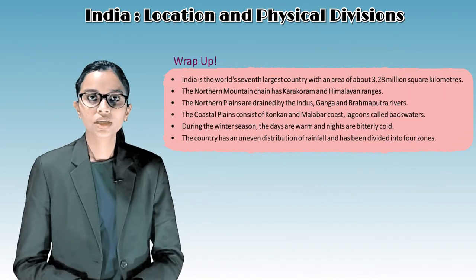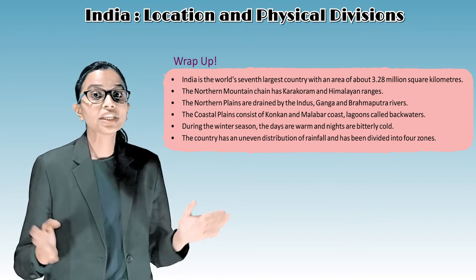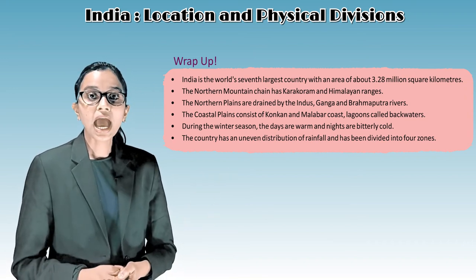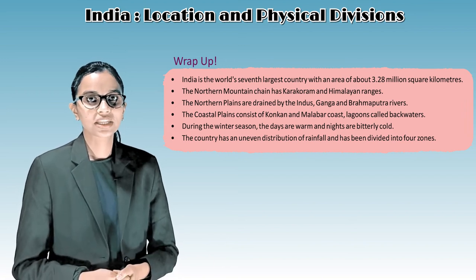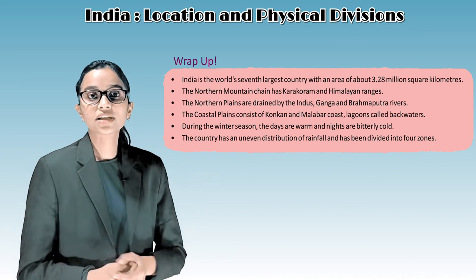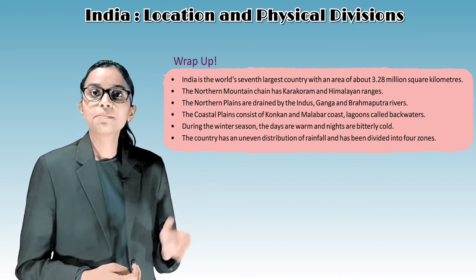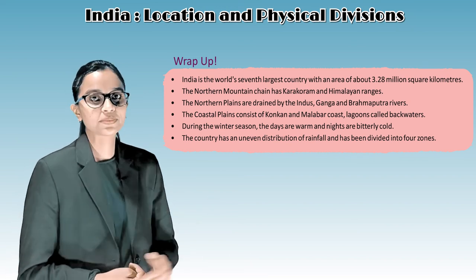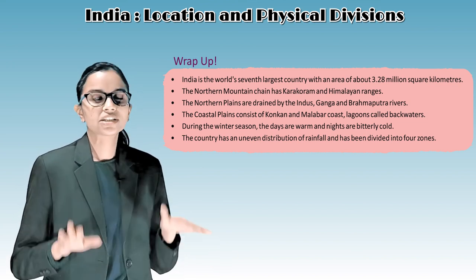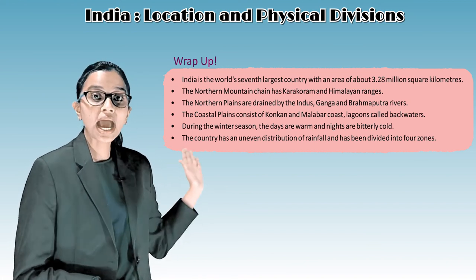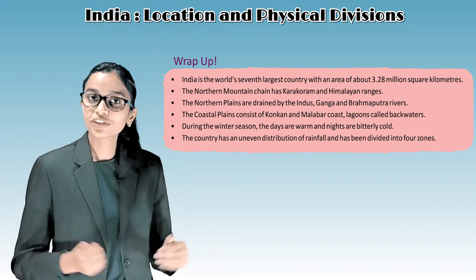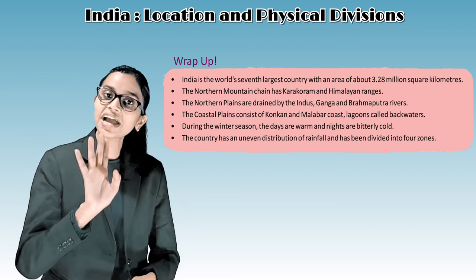To wrap up: India is the world's seventh largest country with an area of about 3.28 million square kilometers. The northern mountain system has the Karakoram and Himalayan ranges. The northern plains are drained by the Indus, Ganga, and Brahmaputra rivers. The coastal plains consist of the Konkan and Malabar coasts, with lagoons called backwaters. During winter, days are warm and nights are bitterly cold. The country has an uneven distribution of rainfall and has been divided into four zones. Goodbye students, we'll meet in the next class.